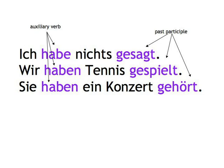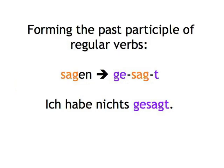So let's tackle the major issue first: how do we form the past participle? Well, for the regular verbs, it's very straightforward. We take the stem part of the infinitive — in other words, the verb minus the -en ending — and then we add a ge- at the beginning and a -t at the end.